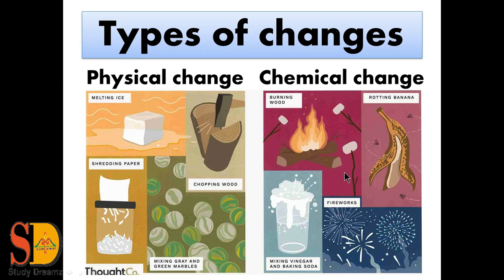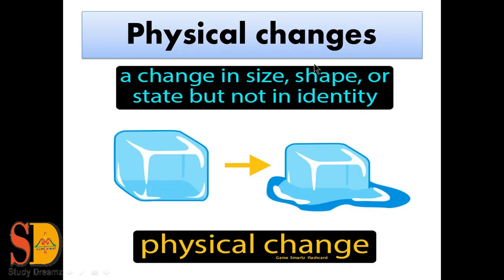Let us discuss in detail. First we have physical change. A change in size, shape, or state but not in identity is known as physical change. It means the state, size, or shape of the object can change, but the property of the object cannot change. This is a physical change.